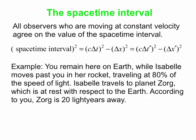Let's do an example. You're going to stay on Earth, and you see Isabel traveling past you and the Earth in her rocket at 80% of the speed of light. Isabel travels to some imaginary planet we'll call planet Zorg, which happens to be in the same reference frame as the Earth — at rest with respect to Earth. According to you, Zorg is 20 light years away. We have to be very careful here: in relativity we always specify the observer. According to you, that's the distance between Earth and Zorg; according to other observers, the distance will be something else.